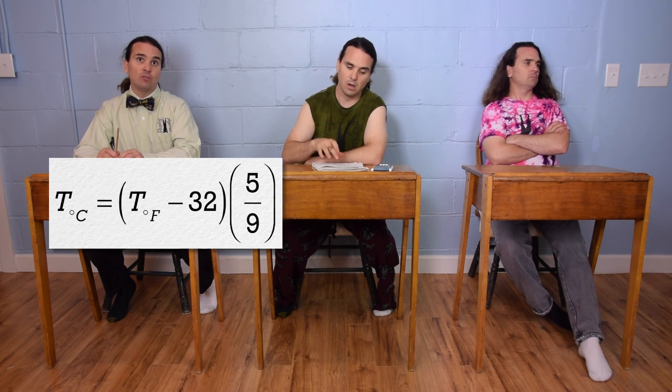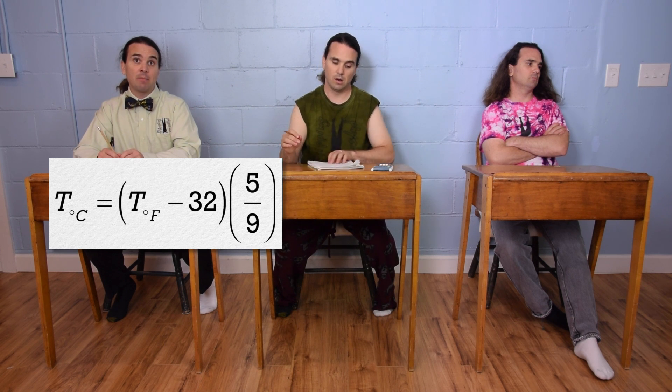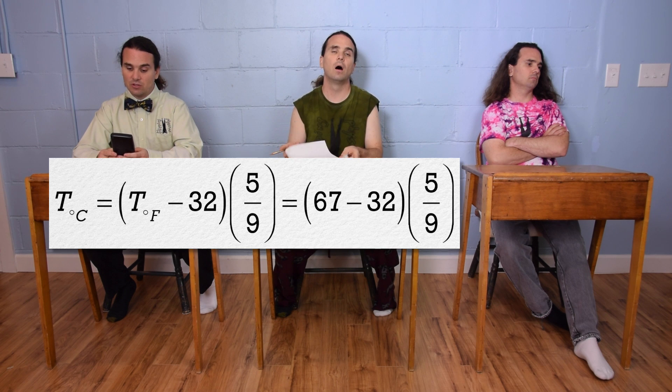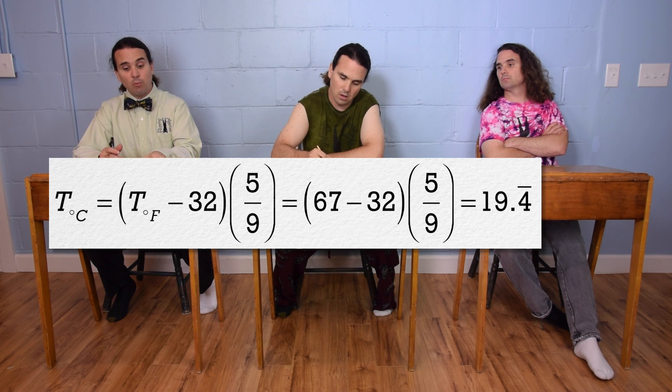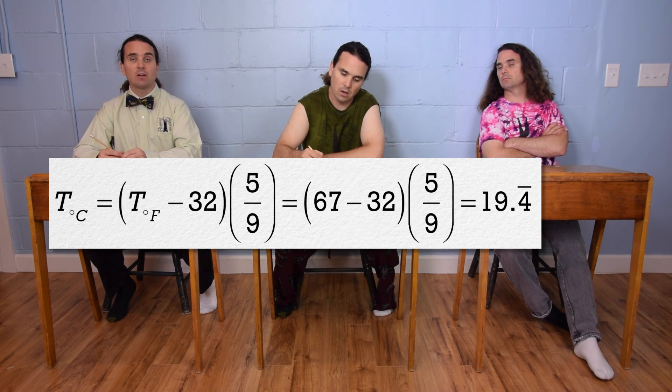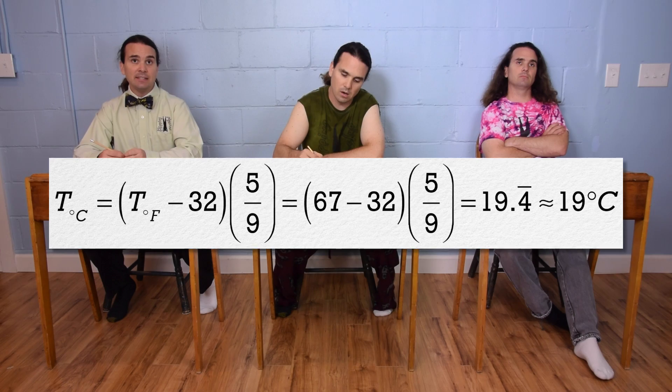Billy? Well, to get the temperature in degrees Celsius, subtract 32 from the temperature in degrees Fahrenheit and multiply that quantity by 5 ninths. In this case, that's 67 minus 32 multiplied by 5 divided by 9. It's 19.4 repeating or roughly 19 degrees Celsius.